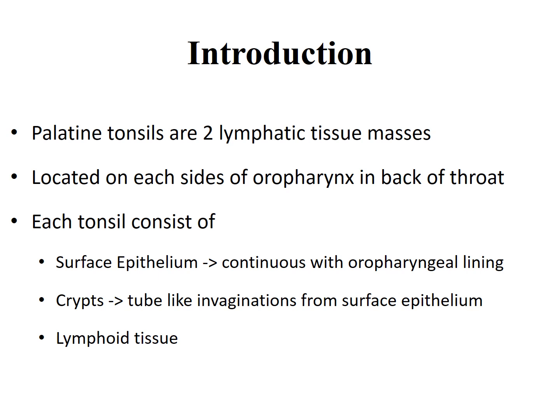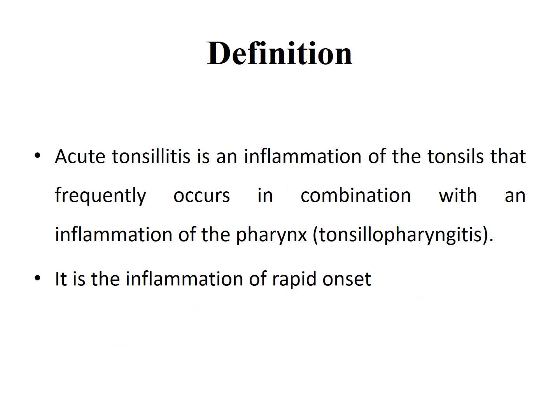Acute tonsillitis is defined as an inflammation of the tonsils that frequently occurs in combination with an inflammation of the pharynx, and together they are known as tonsillopharyngitis. It is the inflammation of rapid onset.